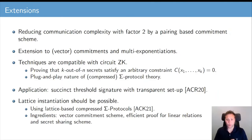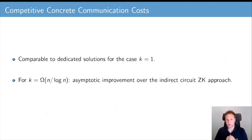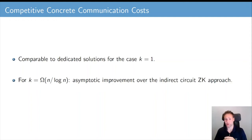A first application was presented in a follow-up paper — the first threshold signature schemes without a trusted setup for which the threshold signatures have size logarithmic in n. Also, a lattice instantiation should be possible: recently at Crypto 2021, compressed sigma protocol theory was instantiated from lattice assumptions, and using these techniques it should be possible to instantiate our proofs of partial knowledge protocols from a lattice assumption. Our protocol achieves logarithmic communication complexity, and the concrete communication costs are comparable with dedicated solutions for the case k equals 1. If k is in the order of omega(n / log n), then we achieve an asymptotic improvement over the indirect circuit zero-knowledge approach.